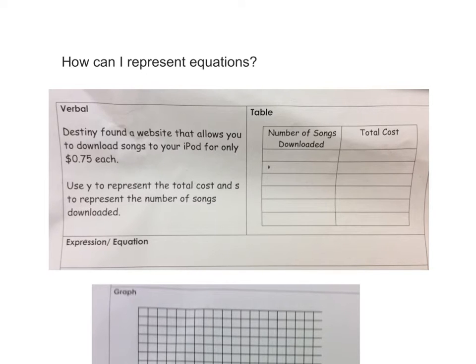Destiny found a website that allows you to download songs to your iPod for only 75 cents each. Use Y to represent the total cost, and S to represent the number of songs downloaded. It already tells me what's going to represent each thing, and so we know that the number of songs downloaded, they're going to be 75 cents each.